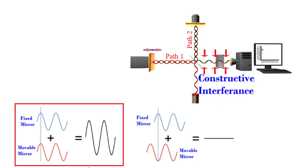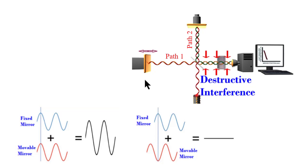This is the graphical representation of the reflected signal from the fixed mirror and the movable mirror. When they recombine at the beam splitter, the intensity will be double that of the individual signal because of constructive interference. Now suppose the scanning mirror on path one is moved near or far by a distance equal to half the wavelength of the radiation. When the beams recombine at the beam splitter, they will be out of phase and cancel each other. This is called destructive interference.